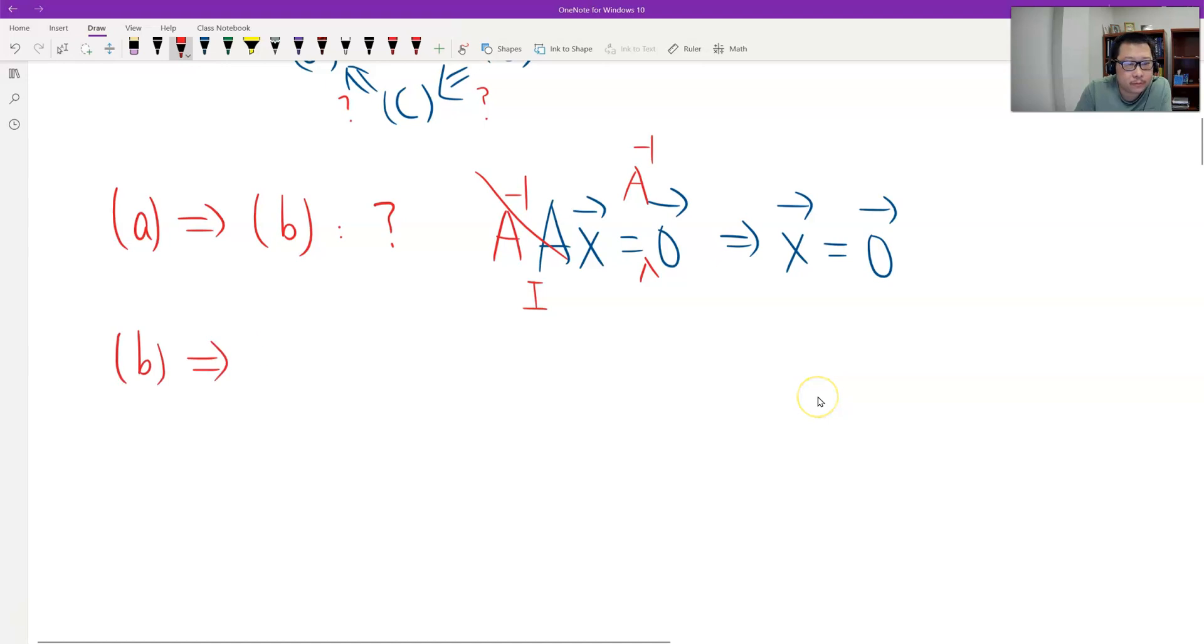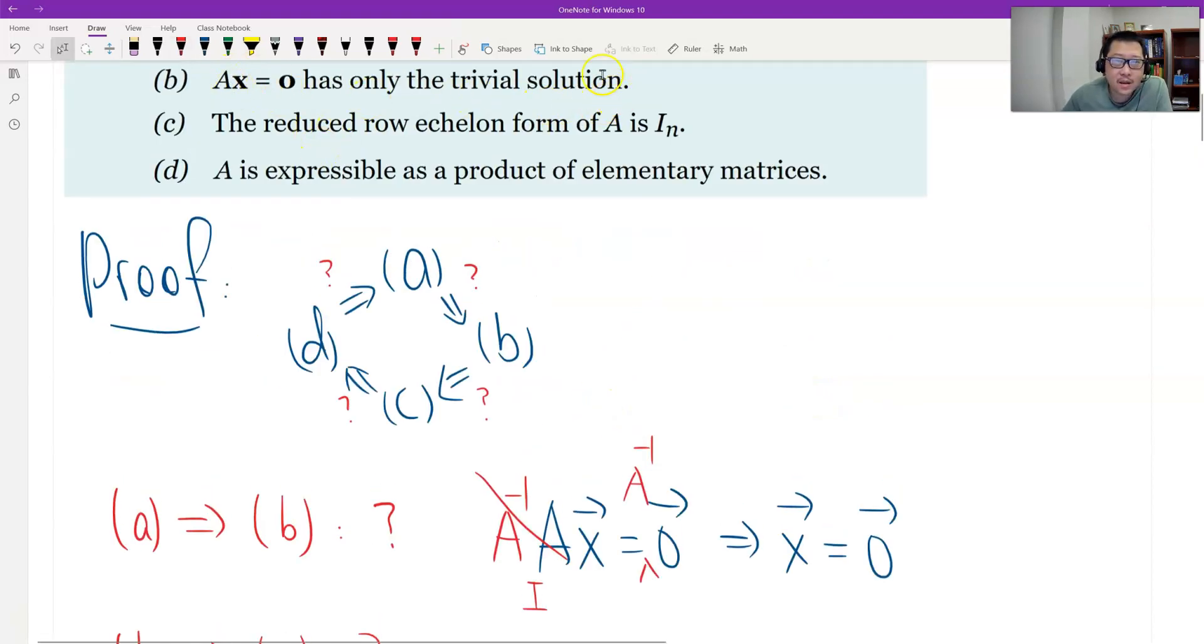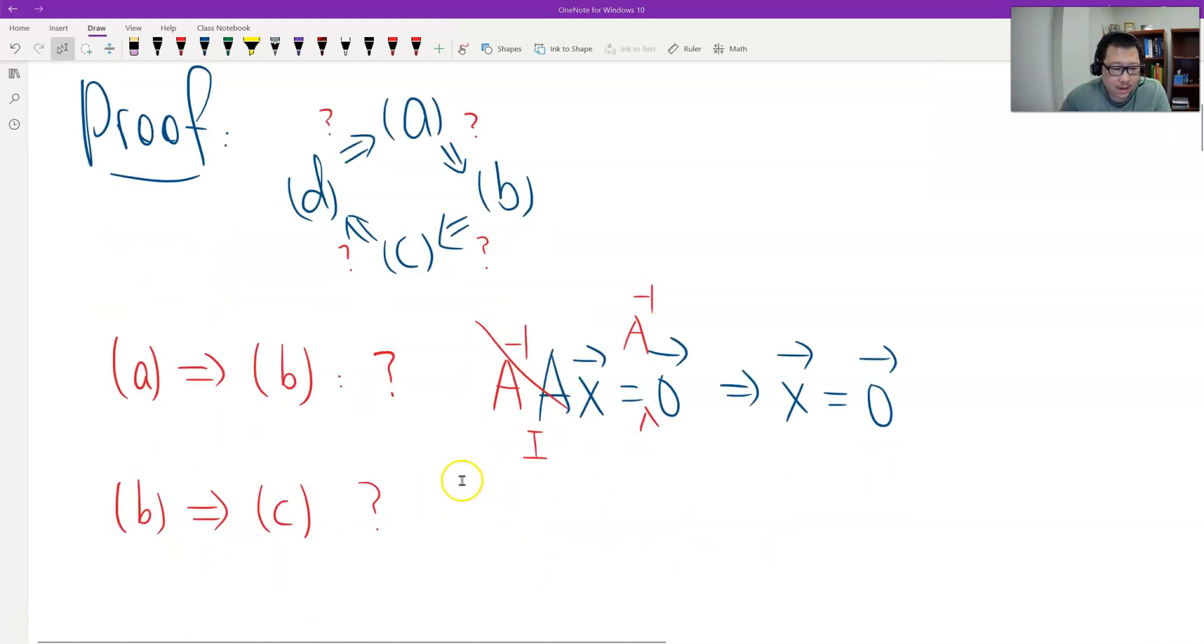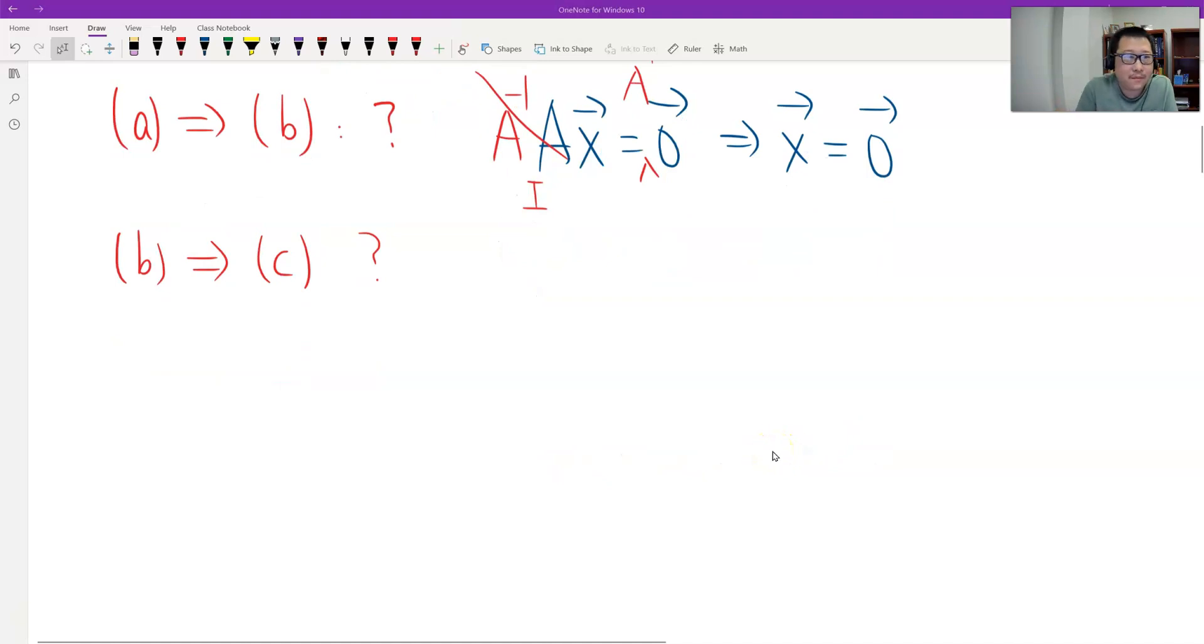And then B to C. What is B to C? B is the homogeneous linear system has only trivial solution. C is the reduced row echelon form of A is In, is identity. We do have a result before. The result is that for any square matrix, the reduced row echelon form is either identity or has one row on the bottom all zeros. So now we just use that result.